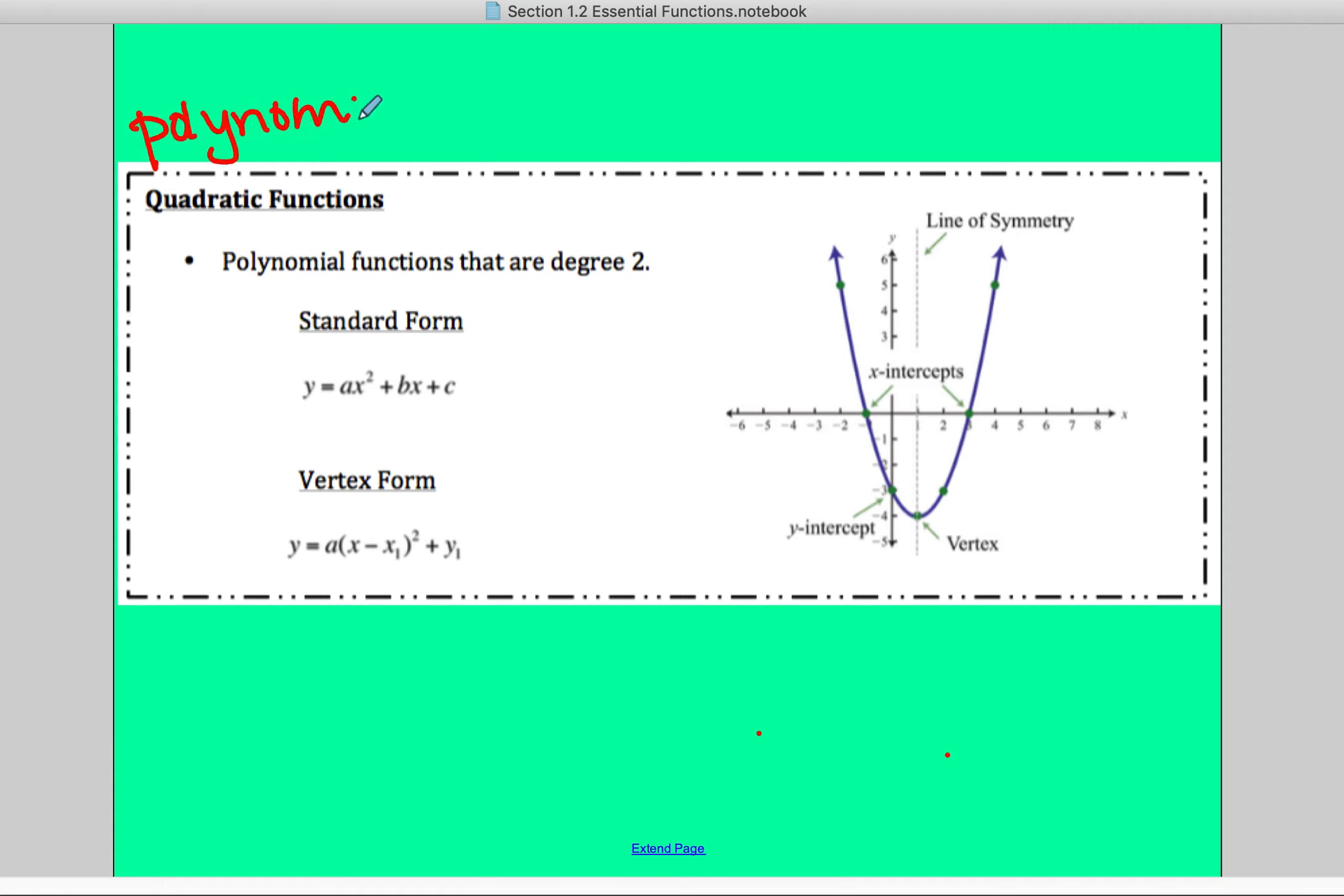Polynomials are a bunch of power functions added together, but here is a specific one. The quadratic function is a specific polynomial, and they have a degree of 2.